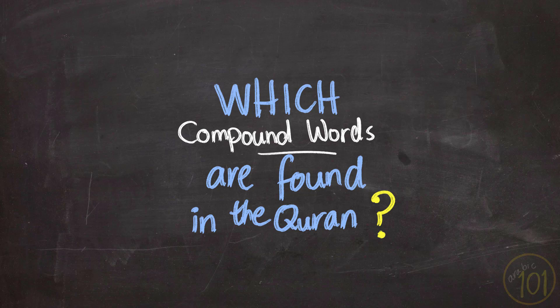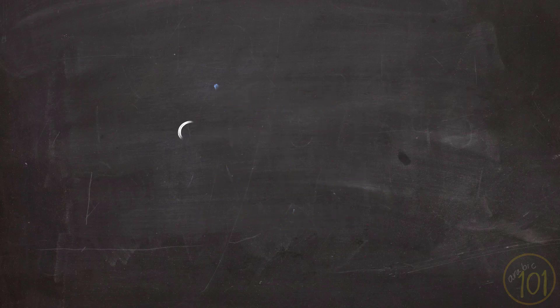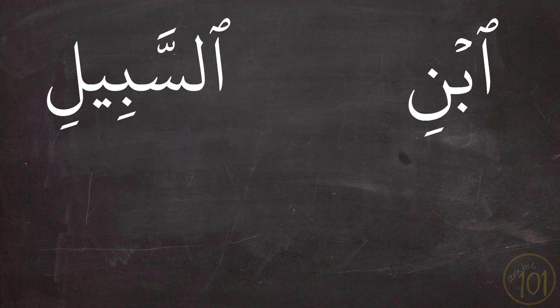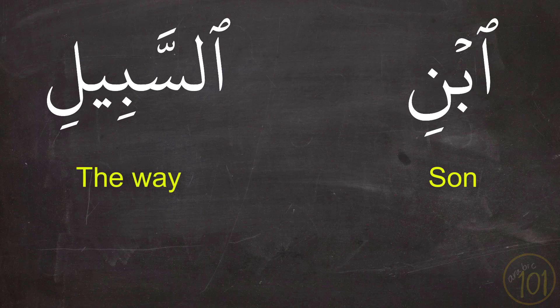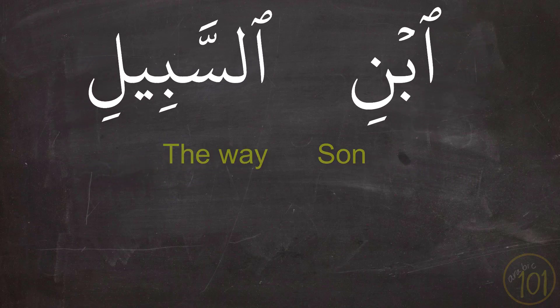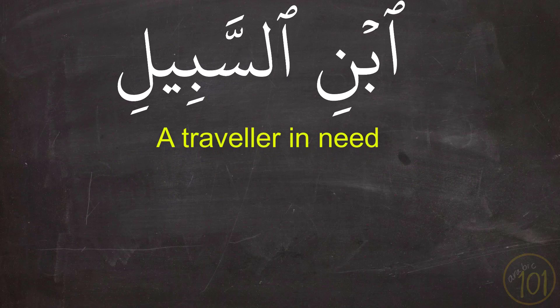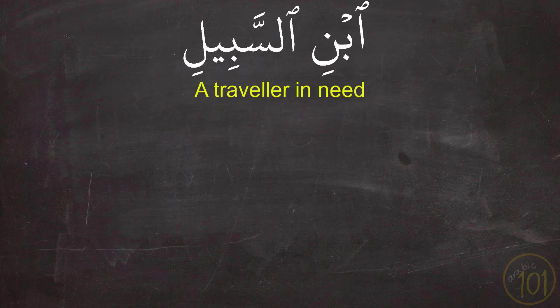So what kind of compound words can we find in the Quran? Let's start with the first compound word: ابن السبيل. This combination is made up of ابن, which means 'son,' and السبيل, which means 'the way.' The combination itself means 'a traveler in need,' and we see it used in the following example.